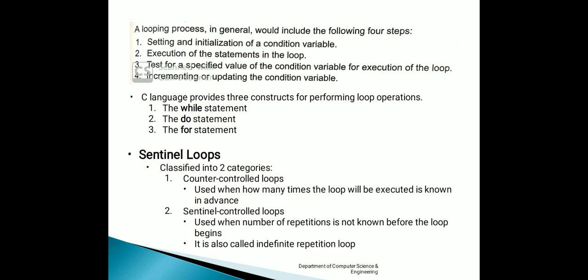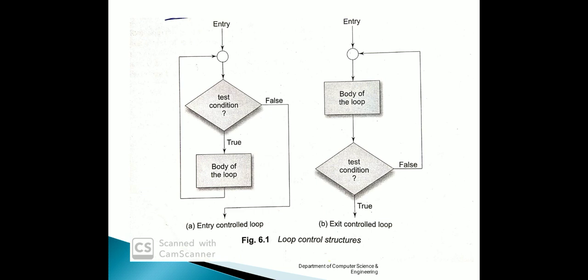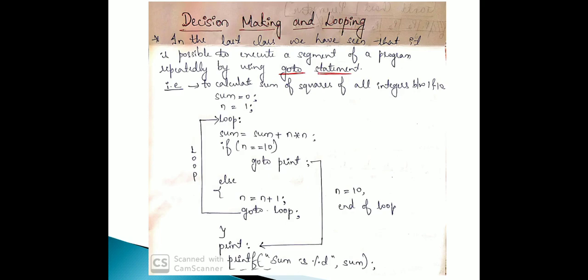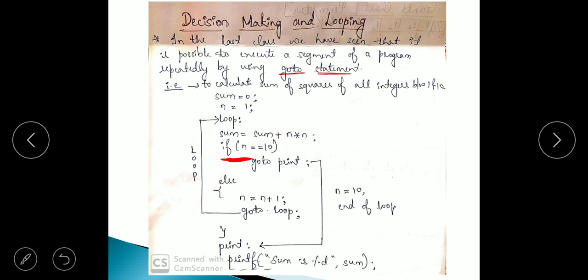When we are performing the looping process, there are some general steps that we need to follow. The first one is setting and initialization of a condition variable. One example that we have seen is calculating sum of squares. What is the condition variable there? It is nothing but n — the condition variable is n, because we are checking the condition with respect to n.